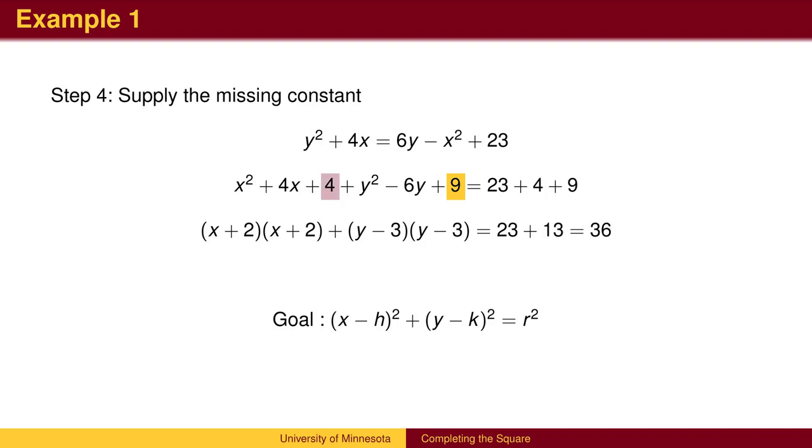But now we have changed the equation. We also need to insert these constants on the right-hand side. We can then add the constants on the right-hand side to get 36.